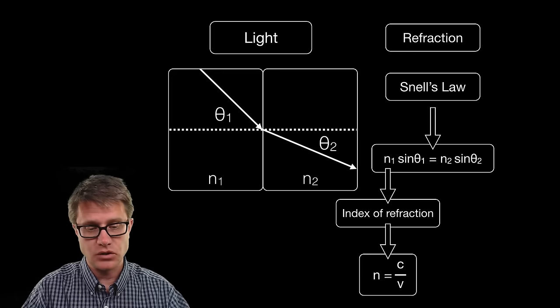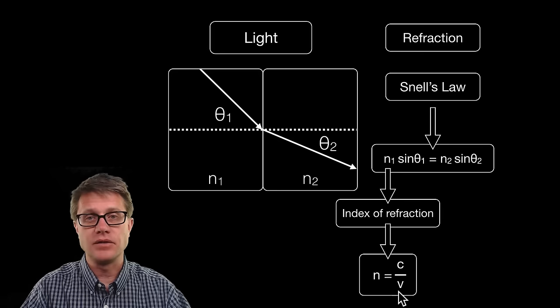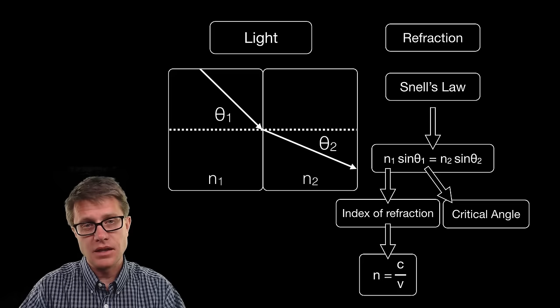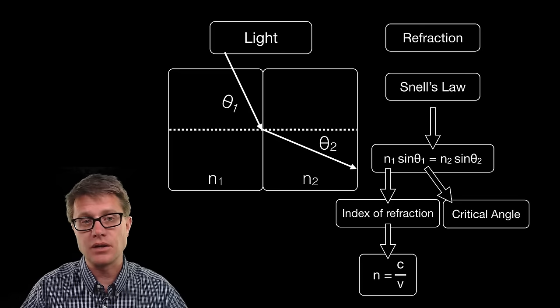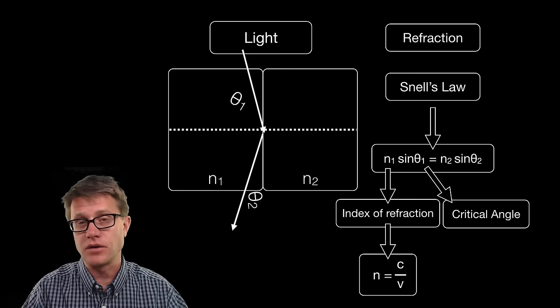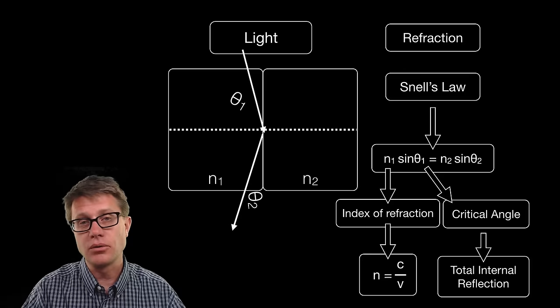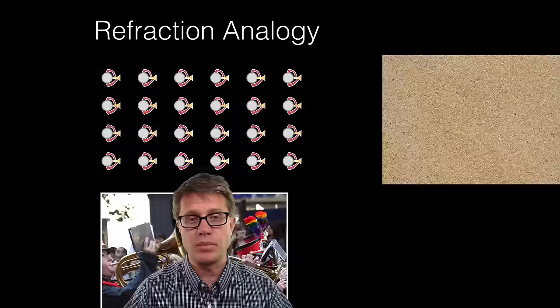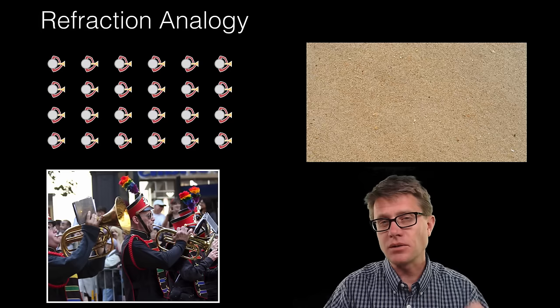The index of refraction is equal to the speed of light divided by the velocity in the medium. If we take the angle of incidence and start to increase it, we eventually reach what is called a critical angle. Instead of being refracted, the light will just go straight along the boundary. If we increase it above the critical angle, it will be reflected back into the first medium — that is called total internal reflection, where none of the light is transmitted through that boundary.